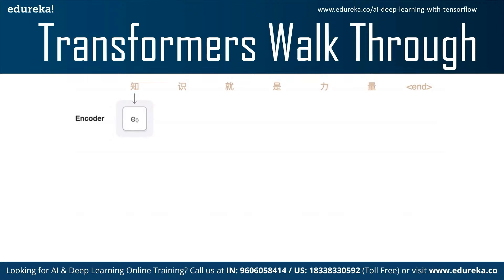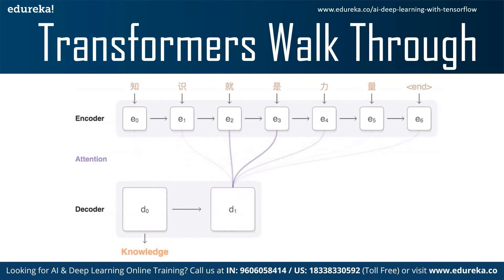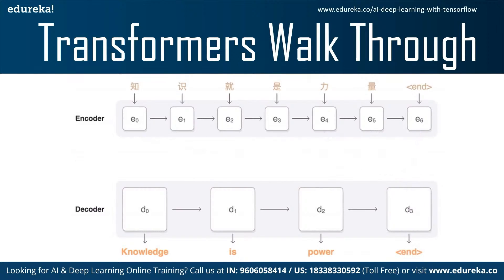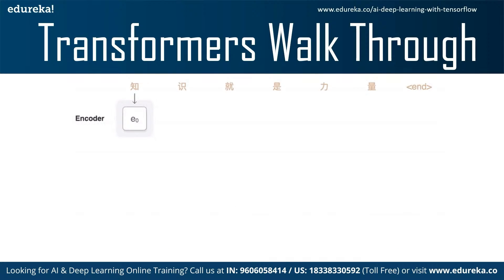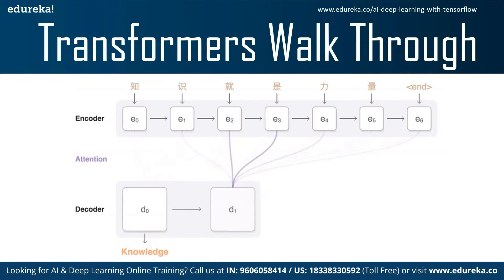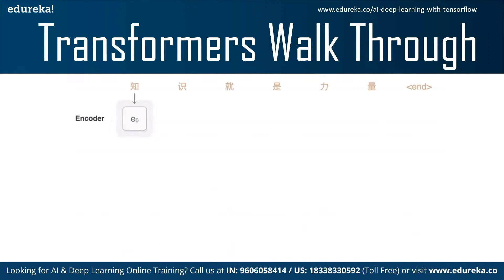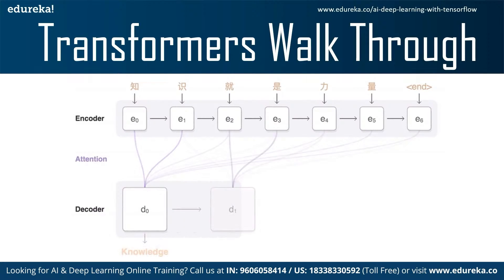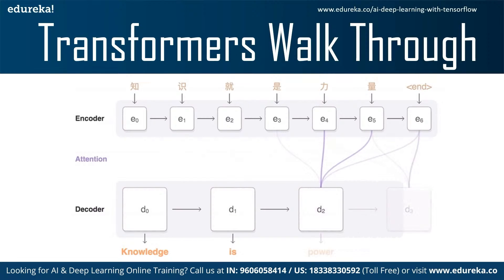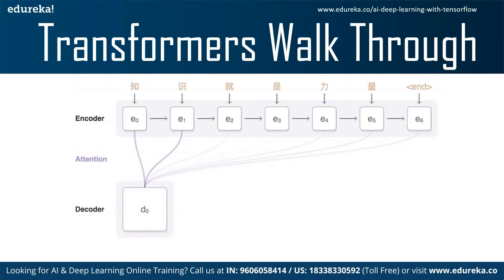One of the best examples of Transformers is Google's BERT. In the Transformer architecture, we have the encoder on top and the decoder on the bottom, both comprised of modules that can stack on top of each other multiple times. The inputs and outputs are first embedded into an N-dimensional space. An important part of this model is the positional encoding of different words — since there is no recurrent neural network to remember sequence order, every word is given a relative position, which is added to the embedded representation of each word.